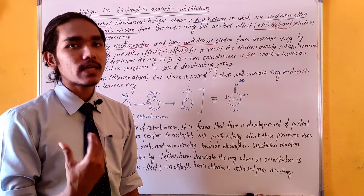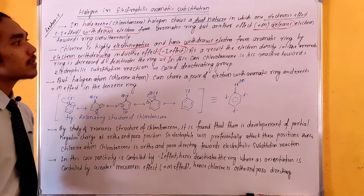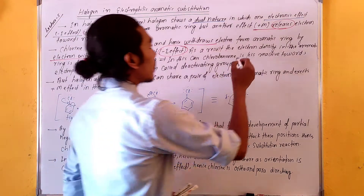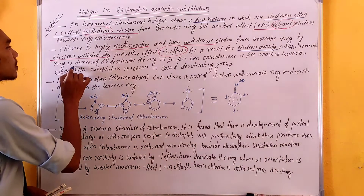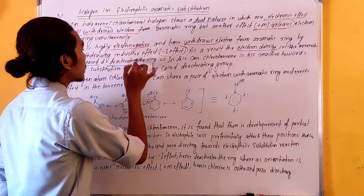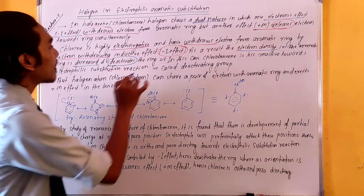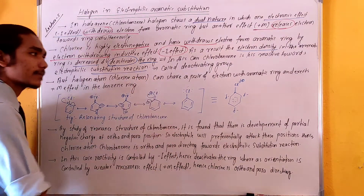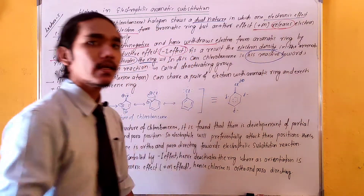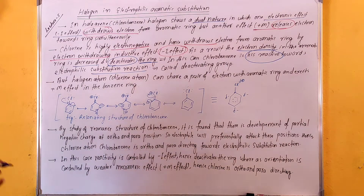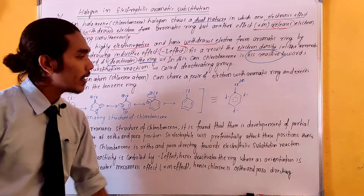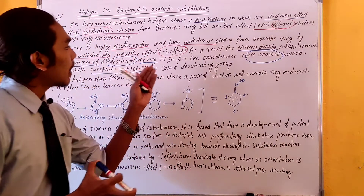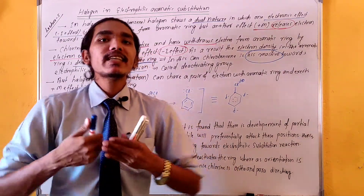As a result, the electron density in the aromatic ring is decreased. A partial positive charge develops on the ring, and the ring becomes deactivated. Therefore, chlorobenzene is less reactive towards electrophilic substitution reactions, and chlorine is classified as an electron-deactivating group.